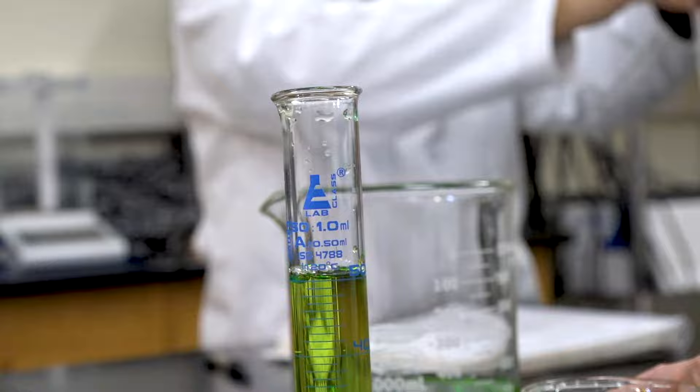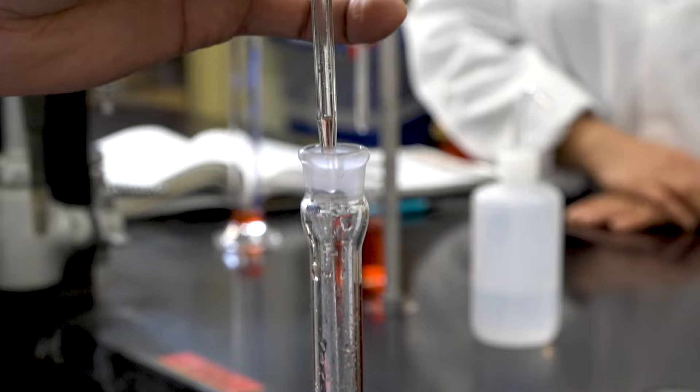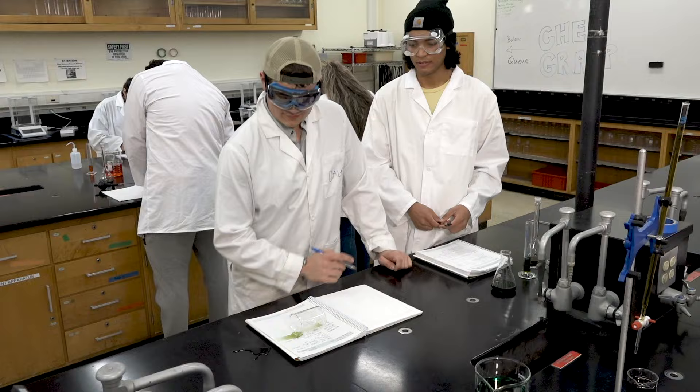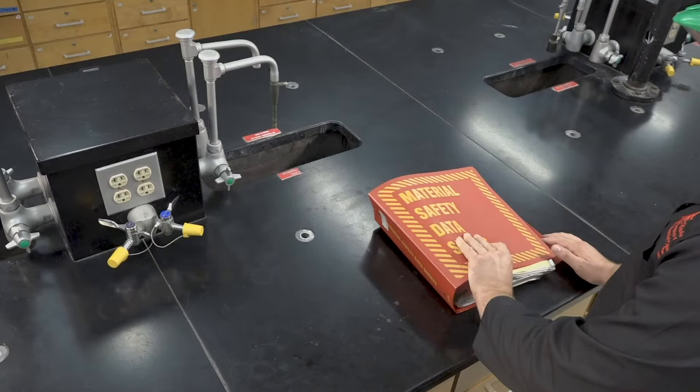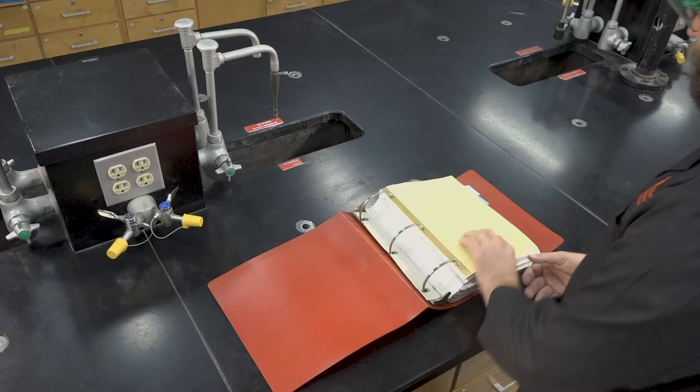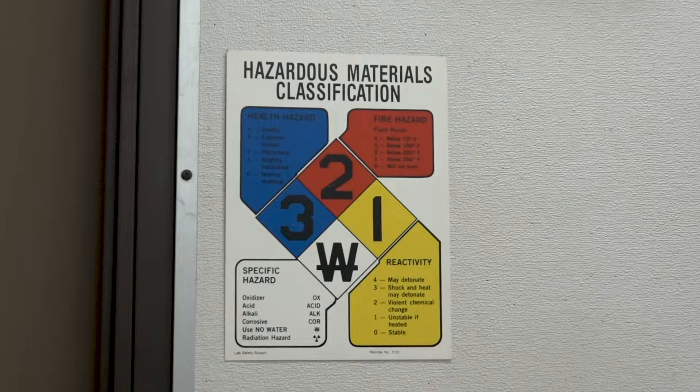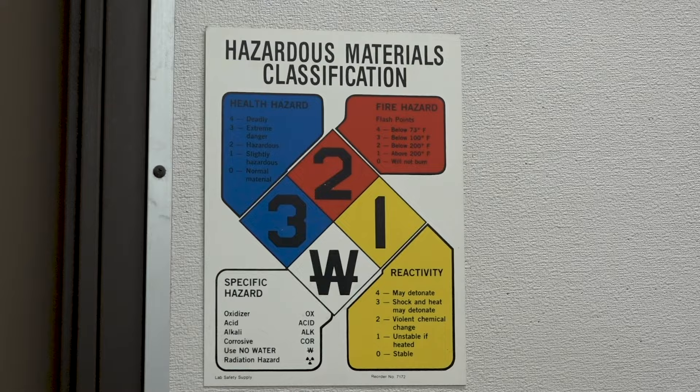The chemistry lab can be a dangerous place, so it's important to know your risks before entering. Before each experiment, you should familiarize yourself with the chemicals being used, especially the relevant safety concerns. All chemicals can be looked up in the Materials and Safety Data Sheet, or MSDS. Chemicals are listed alphabetically by name. The hazmat diamond summarizes the safety of each chemical by rating its health hazard, flammability, and instability. The bottom-most diamond is for additional safety considerations, such as if the substance is reactive with water.